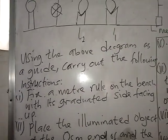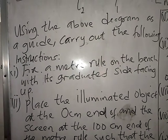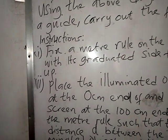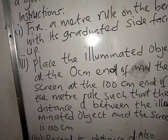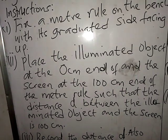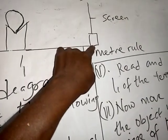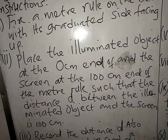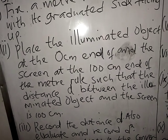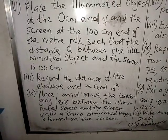The question says: using the above diagram as a guide, carry out the following instructions. One: place a meter rule on the bench with its graduated side facing up. Three: place the illuminated object at the zero cm end and the screen at the 100 cm end of the meter rule. Adjust the meter rule such that the distance D between the illuminated object and the screen is 100 cm, covering the whole length of the meter rule. Then record the distance D.